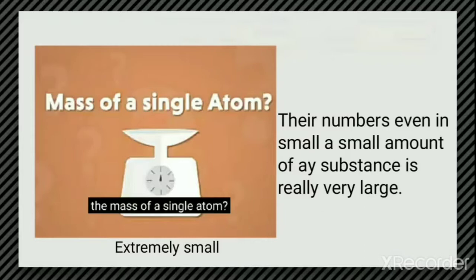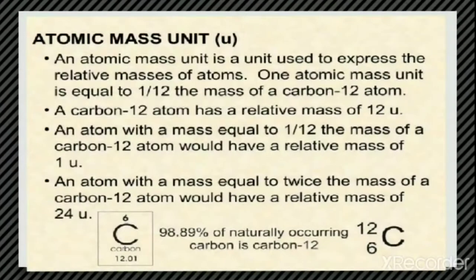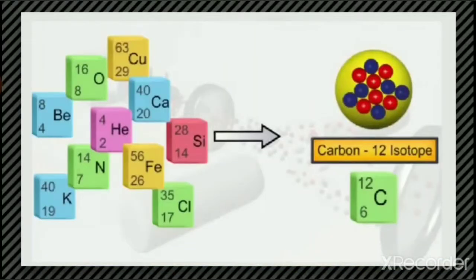Let us discuss what that unit is. As we have discussed, atomic mass of an atom is actually the relative mass, which is found out by comparing its mass with the mass of the C-12 isotope. Because of that, we came up with a new unit — the atomic mass unit. An atomic mass unit is the unit used to express the relative mass of an atom. Atomic mass is not the real mass of an atom but a relative mass, and one atomic mass unit is equal to one-twelfth of the mass of a C-12 atom.